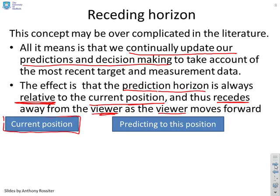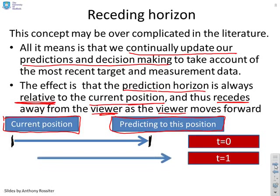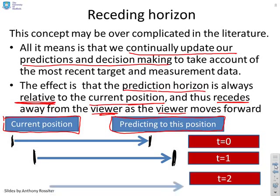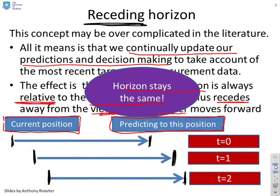Imagine your current position marked by a box, predicting to a position some way in the future. At time t=0, you predict from a start point to an end point. If you go forward in time, your start point has moved forward, and with the same prediction horizon, you're now predicting to a point which is further ahead. At t=2, your start point has moved again, and therefore your end point has moved too. That's all that receding horizon means — the end point moves away as the start point moves forward, and the actual prediction distance always stays the same.